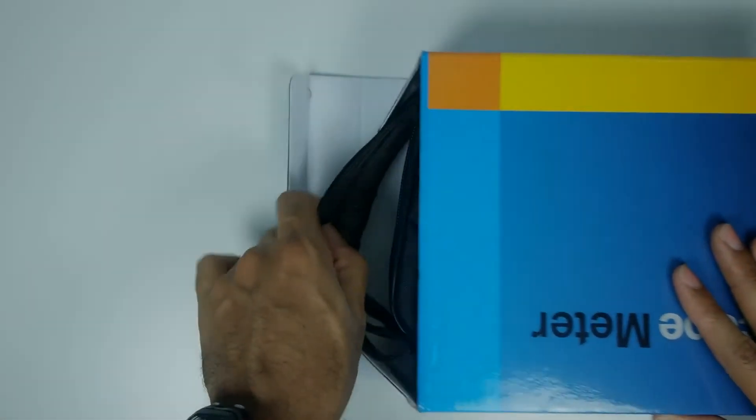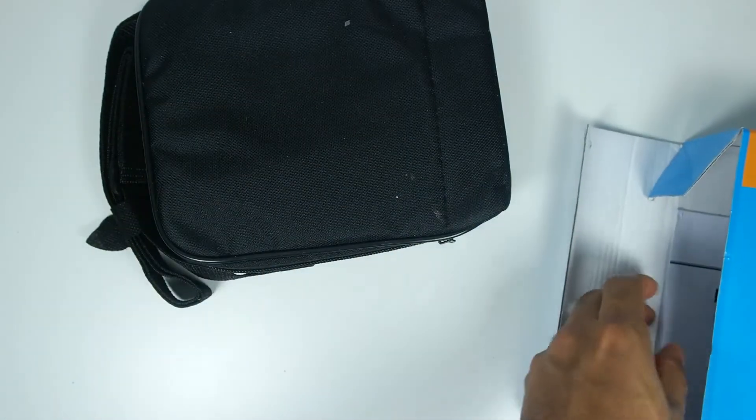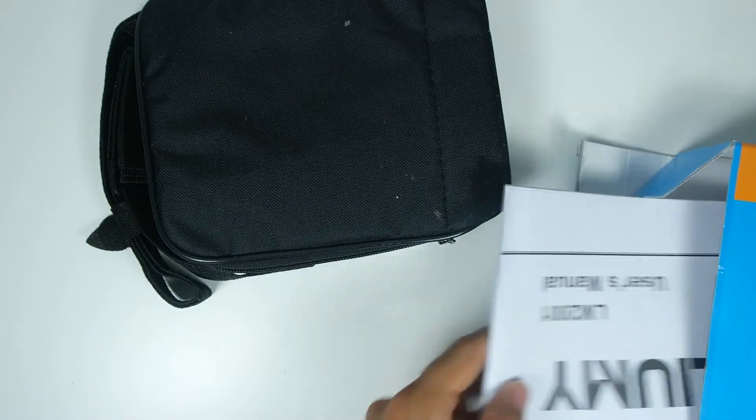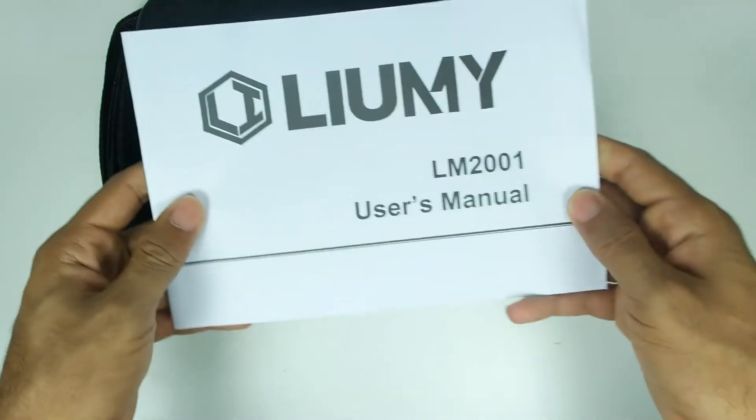What's going on everybody, in today's video we're going to be reviewing the Lumi LM2001. This is a multimeter that has some oscilloscope features inside of it, which makes it very interesting. First we're going to be unboxing the multimeter.